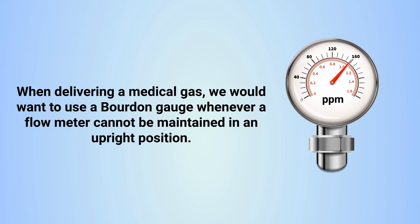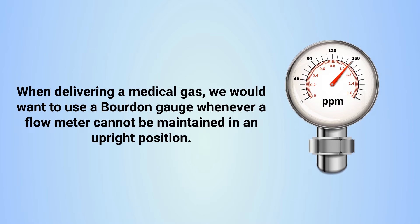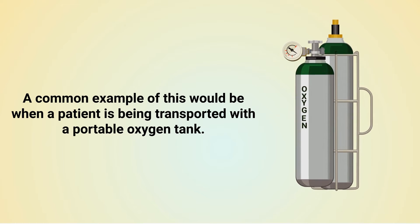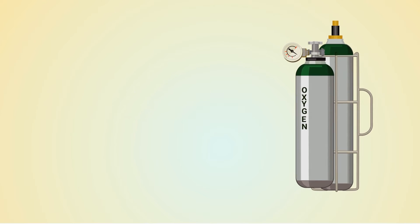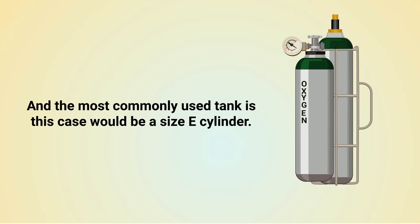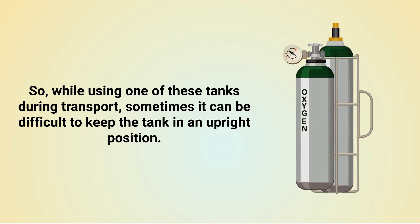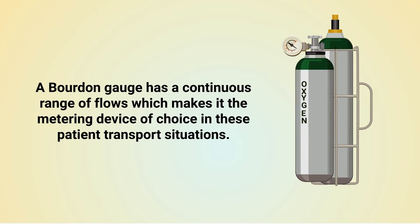When delivering a medical gas, you would want to use a Bourdon gauge whenever a flow meter cannot be maintained in an upright position. A common example is when a patient is being transported with a portable oxygen tank — most commonly a size E cylinder. During transport, it can sometimes be difficult to keep the tank upright. A Bourdon gauge has a continuous range of flows, which makes it the metering device of choice in these patient transport situations.